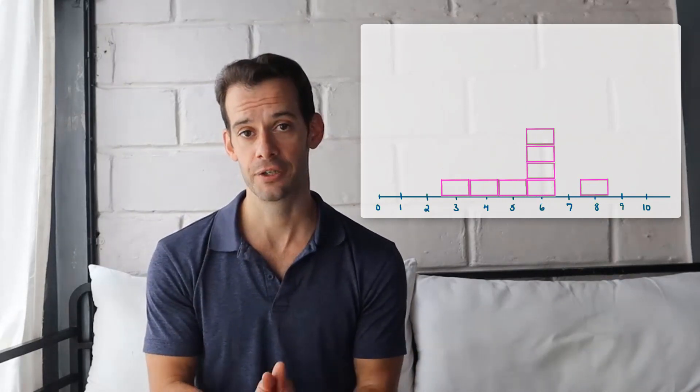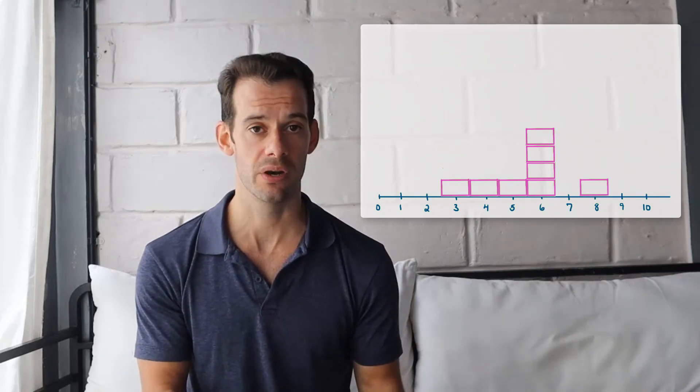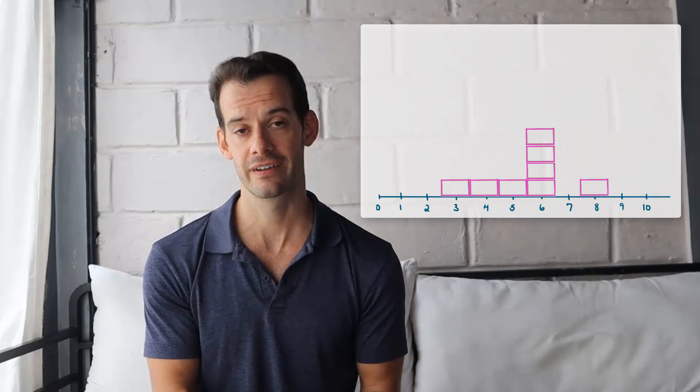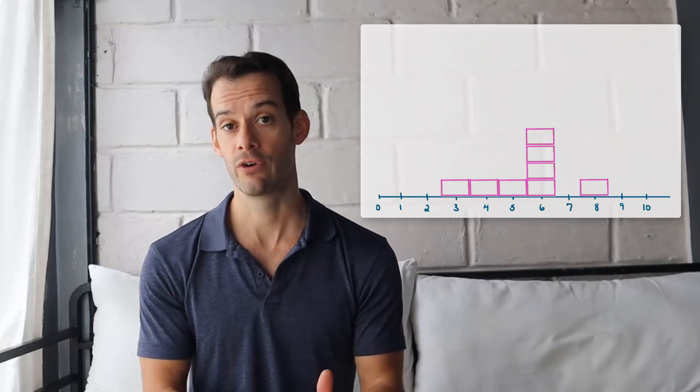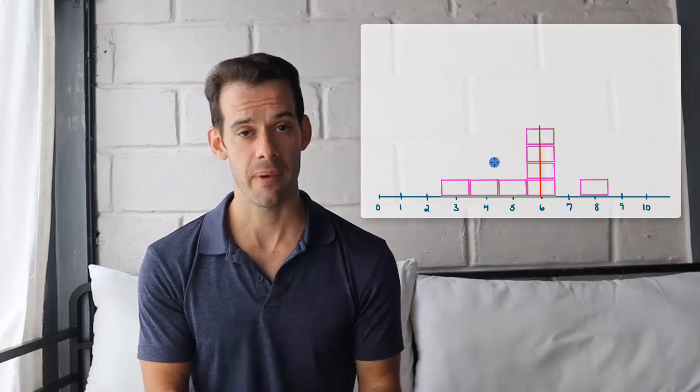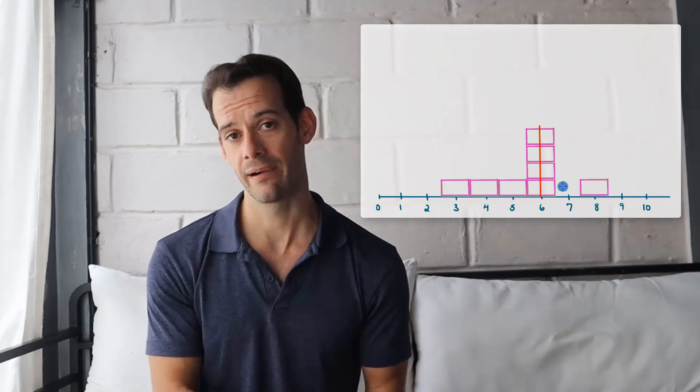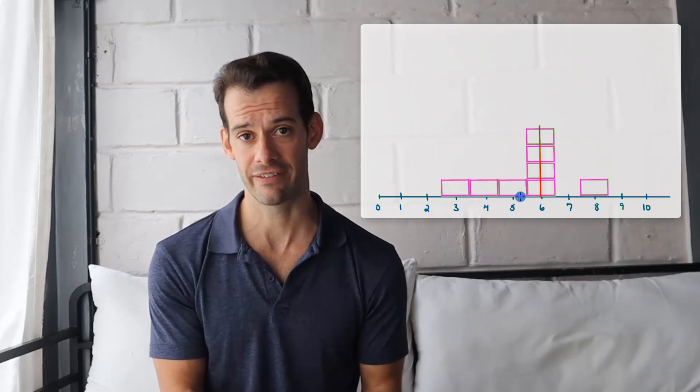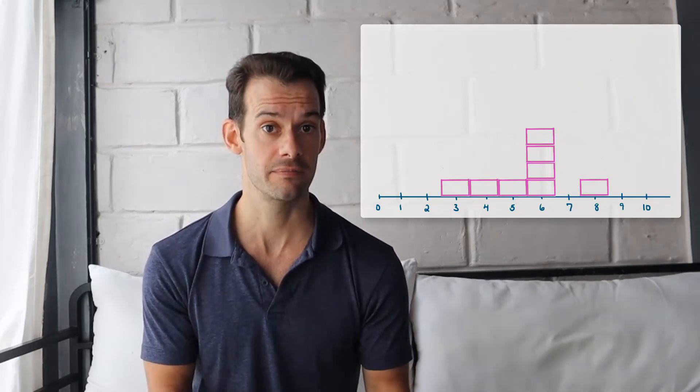Now our median should be the point where 50% of scores are below and 50% are above. That means we should have 4 boxes to the left and 4 boxes to the right. And if we draw a line right at 6 we see that this isn't quite right. The area of the boxes to the left is larger than the area of the boxes to the right. This tells us that our median is actually somewhere between 5 and 6. So how do we find this point?